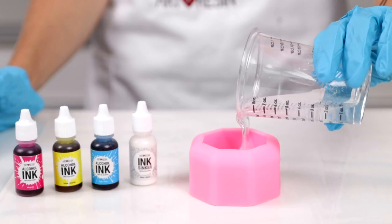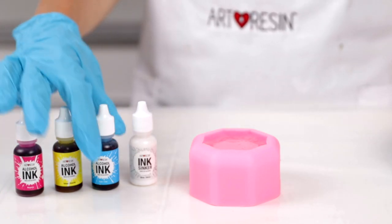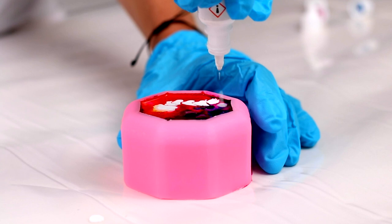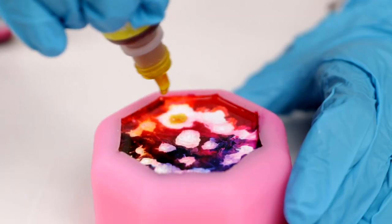Pour the mixture into your mold right to the top, then just drop in your favorite colors straight from the alcohol ink bottles and use the ink sinker to push the colors through the resin.